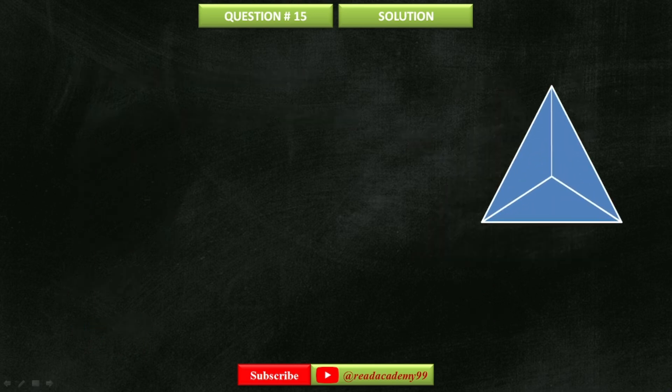In the next part of this question, I'm going to find the volume of the tetrahedron, which is equal to 1 by 3 times area of base times the height of the tetrahedron.